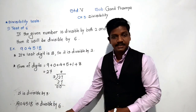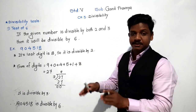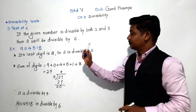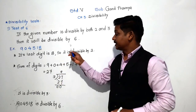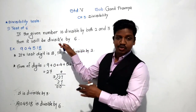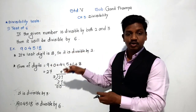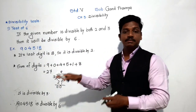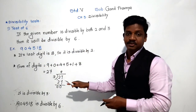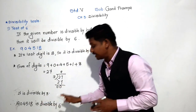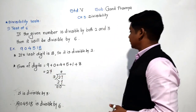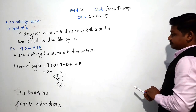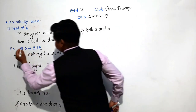Understood? There is no separate or special test for 6. We applied test of 2 and then test of 3. We found that the given number is divisible by both 2 and 3, so it is automatically divisible by 6. This is the test of 6. We will take one more example.